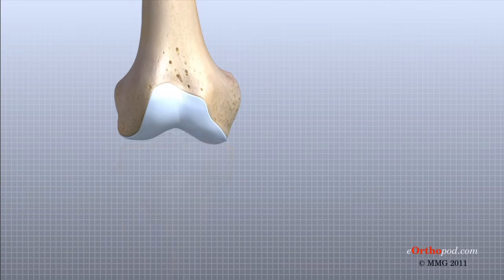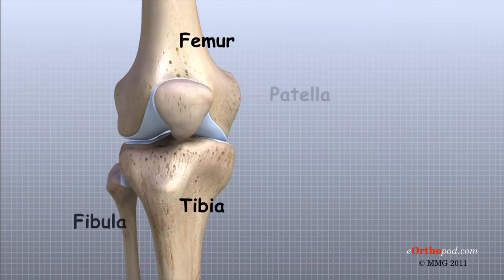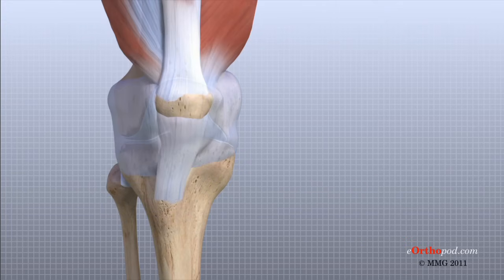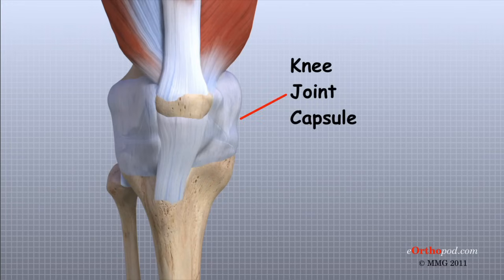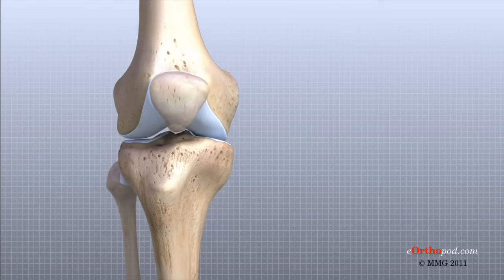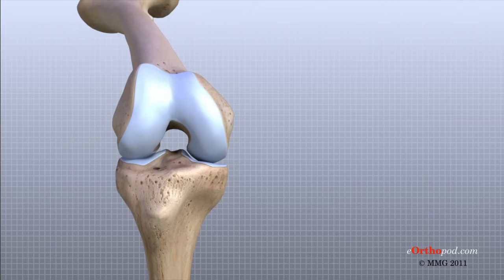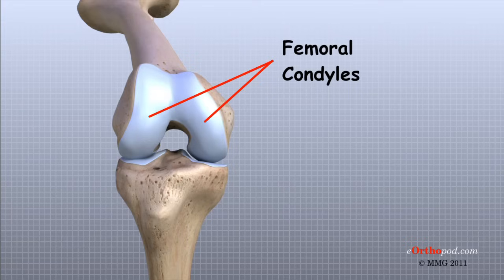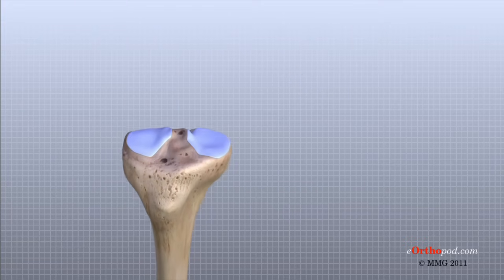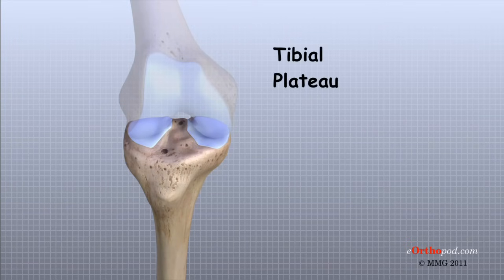The knee is the joint where the femur and the tibia meet. The patella, or kneecap, is made of bone and sits in front of the knee. The knee joint is a synovial joint, enclosed by a ligament capsule and containing synovial fluid that lubricates the joint. The end of the femur joins the top of the tibia to create the knee joint. Two round knobs called femoral condyles are found on the end of the femur, and these condyles rest on the top surface of the tibia, called the tibial plateau.